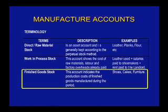We now look at the finished goods stock account. This account indicates the production cost of the finished goods manufactured during a particular period. Looking at what the final product is — if we take the leather, put it together, glue it, and assemble everything — the final product is the shoe, the cake, or the furniture.